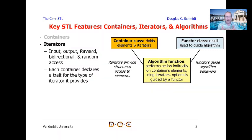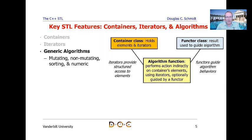Traits are basically implemented typically as type defs of local classes that have particular properties associated with them. They're very cool and they support the concept of generic programming. The final topic we're going to cover in great detail is generic algorithms. There are several different categories: mutating algorithms that change the contents of containers, non-mutating algorithms that read the contents, ways to sort containers, and numeric operations that work on elements of containers.